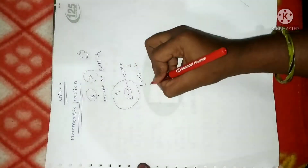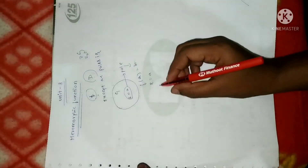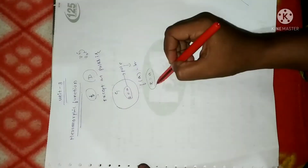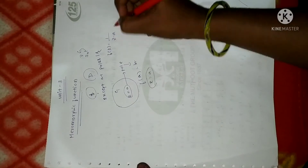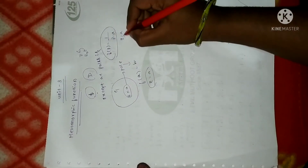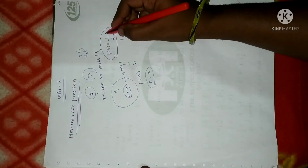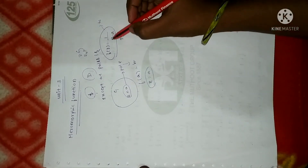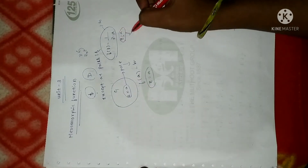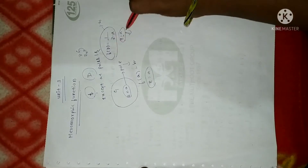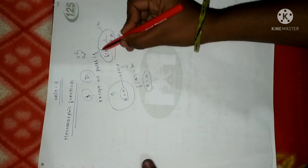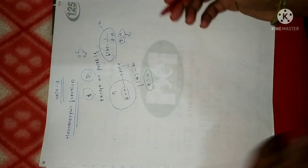We can remove the continuity of f(z) at z = a, but we cannot make f(z) analytic there. For example, if f(z) = 1/(z − a), substituting z = a gives 1/0 = ∞, so the function is never analytic at that point. Since f is not differentiable when z = a is a pole, this type of function is called meromorphic.